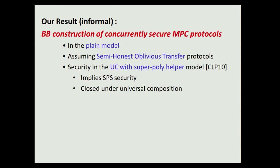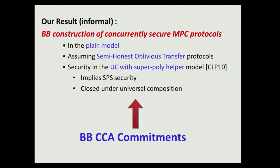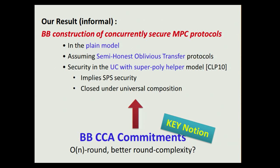In summary, we gave a black box construction of a concurrently secure multi-party computation protocol in the plain model. The key construction is a black box CC secure commitment. CC security is the key notion because in a black box construction there's lots of cut-and-choose and lots of opening, and we would like to guarantee that security holds even with respect to those openings. One unsatisfactory part of our result is that the construction has very high round complexity — in fact it's O(n) rounds. So one obvious open question is: can we get better round complexity? That's all — thank you.